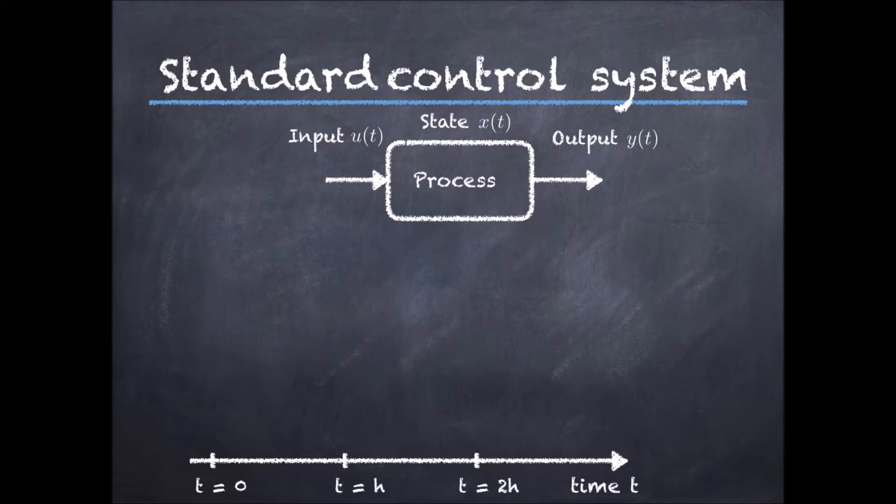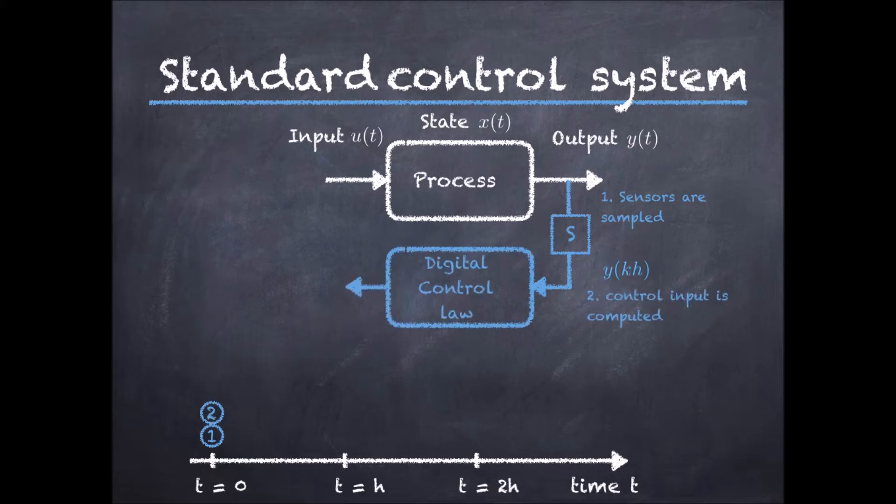It simply happens periodically, with a sample period h. At time 0, the sensors are sampled, the control input is computed, and the actuators are refreshed. The process is repeated at time h, at time 2h, etc.